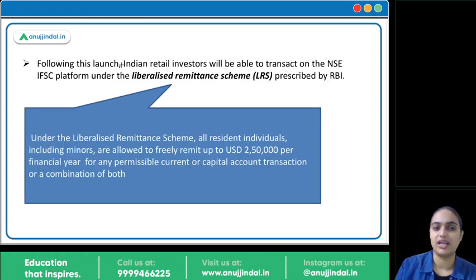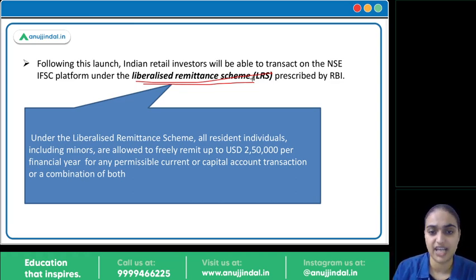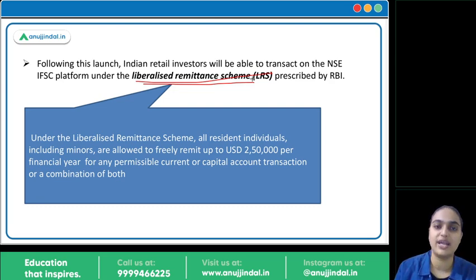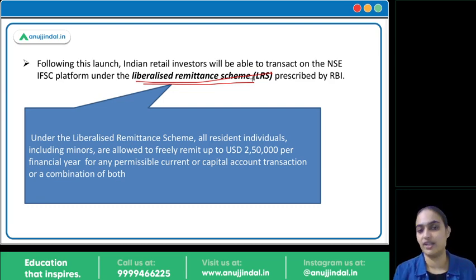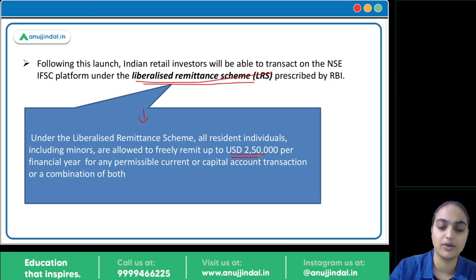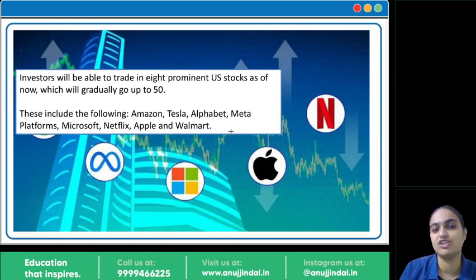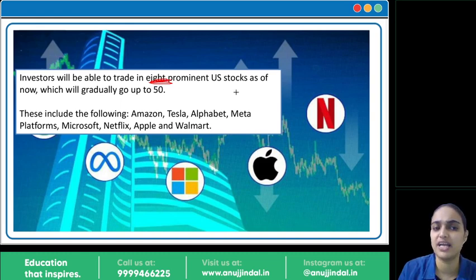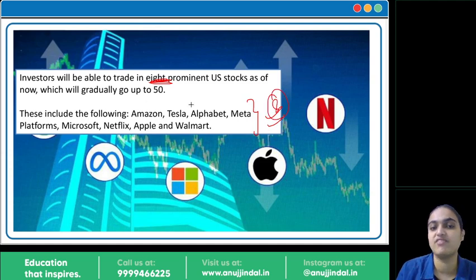Under the Liberalized Remittance Scheme (LRS), you can remit a certain amount for various current and capital account transactions. From India, you can remit up to 2,50,000 US dollars. So if you want to invest through NSE IFSC's platform in US international stocks, you can do so under the LRS scheme. This scheme allows all resident individuals to remit up to 2,50,000 US dollars from India for current and capital account transactions including import, export, FDI, and FPI.